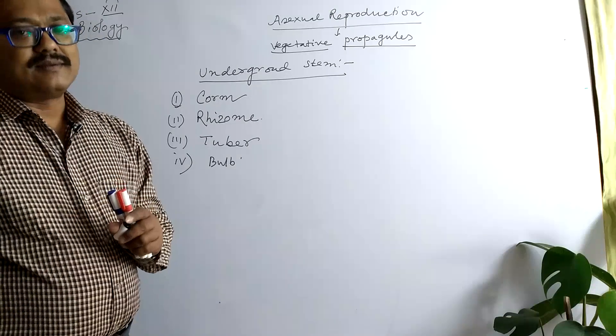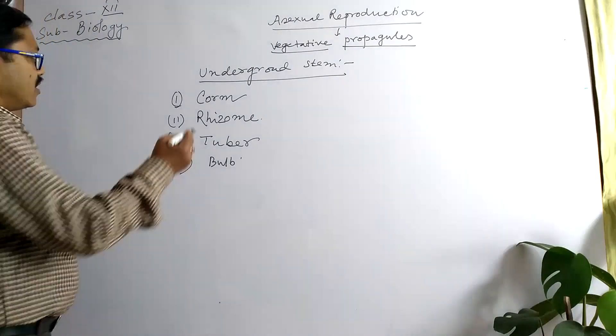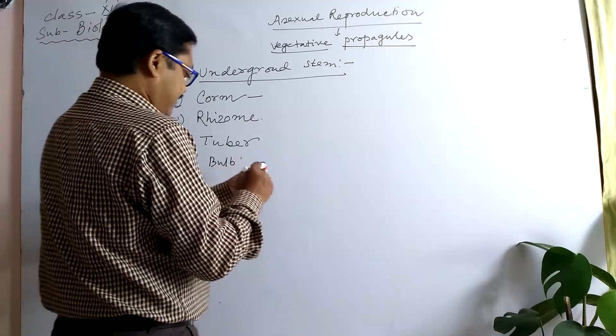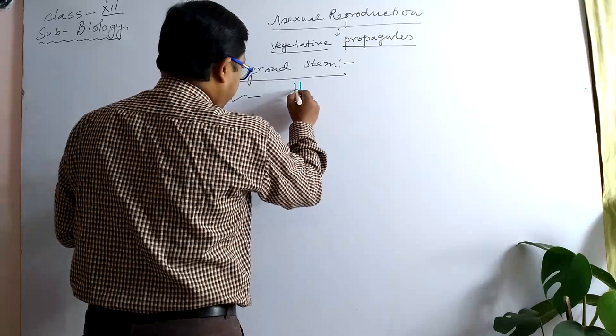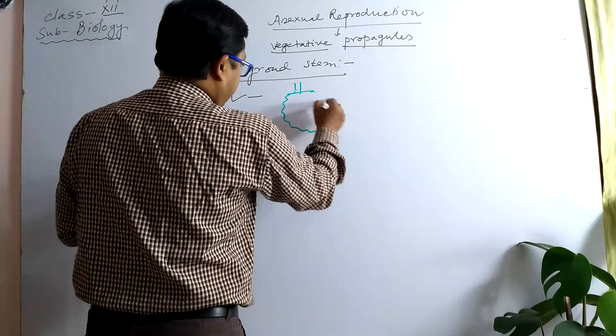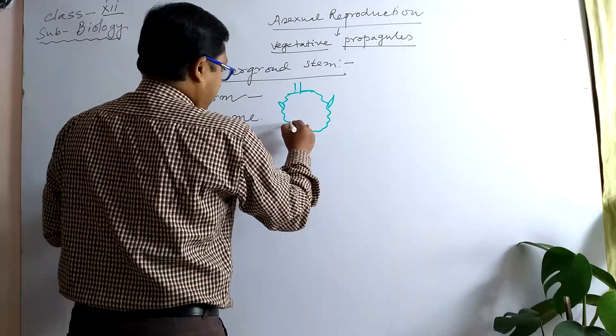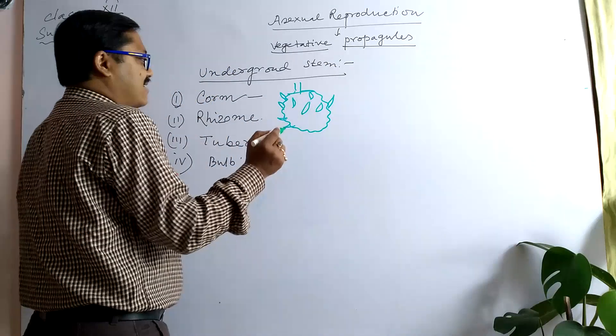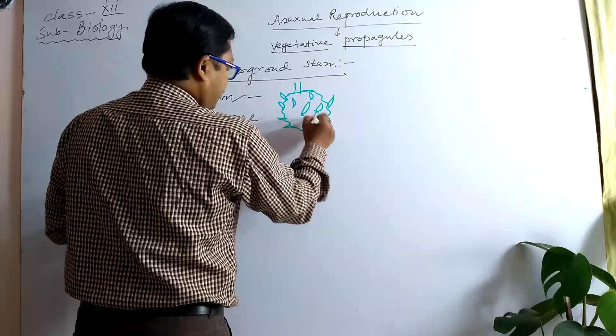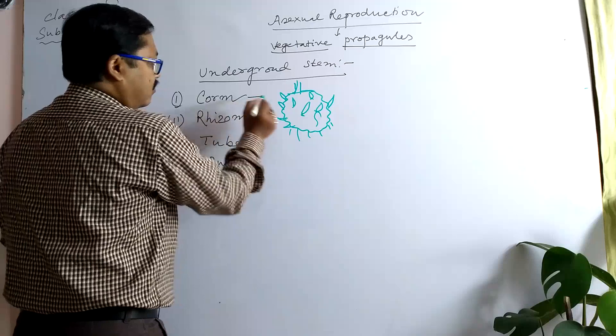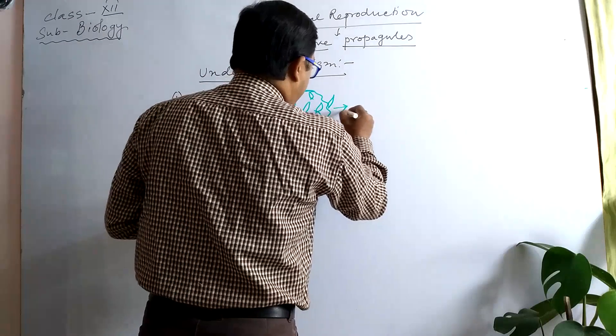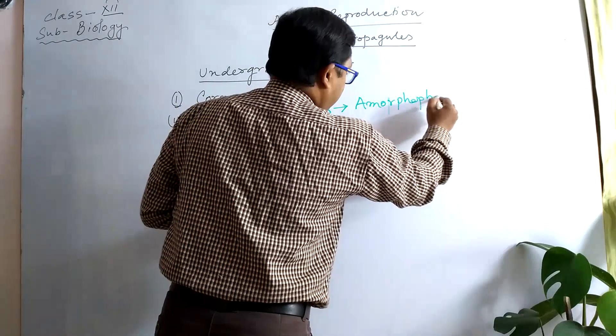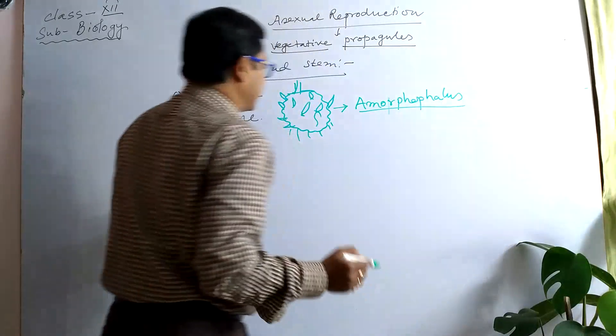From this axillary bud, the new plant may originate. For example, Corm is a round and large separate structure like this. This is a stem, an enlarged portion, and some protrusion develops. This is nothing but the axillary bud. This is Corm, found in Amorphophallus campanulatus.